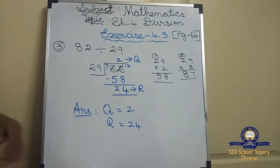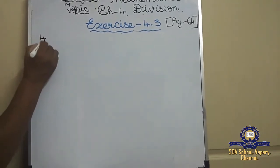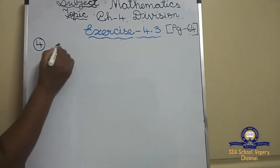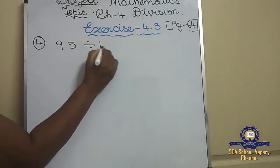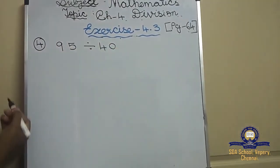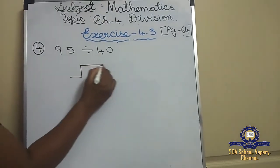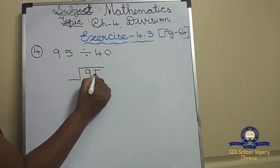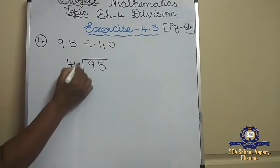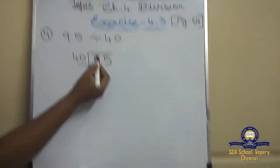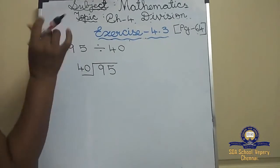We'll see the fourth sum: 95 divided by 40. The dividend is 95 and the divisor is 40. While writing itself, say and write — the first number is the dividend and the second one is the divisor.